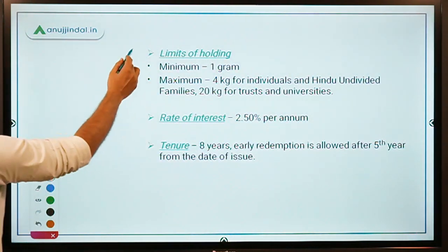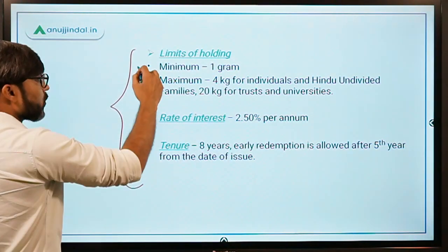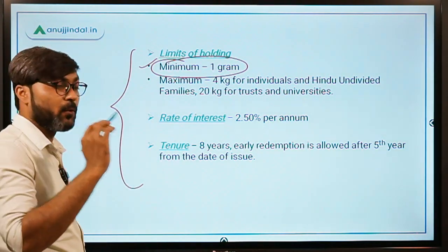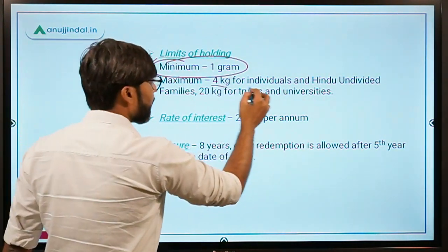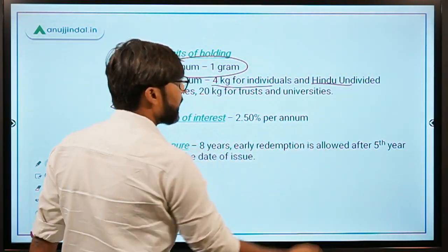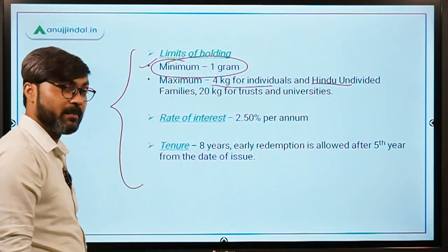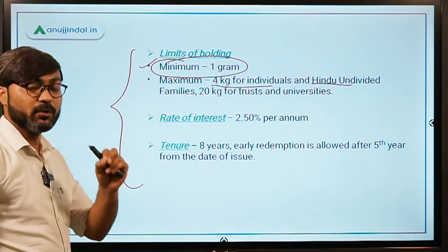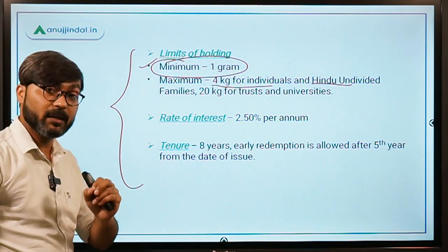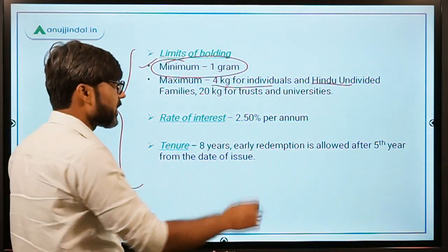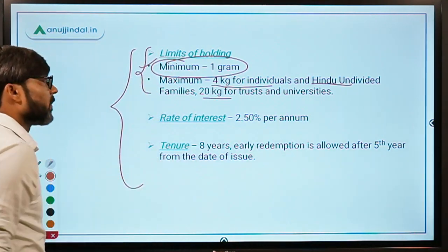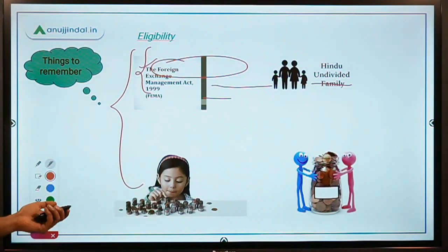Regarding the limits of holding: the minimum is one gram. The maximum is 4 kg for individuals and Hindu Undivided Families. The maximum limit for Trusts, Universities, and Charitable Institutions is 20 kg. This is very important to remember, as it can be asked in exams.